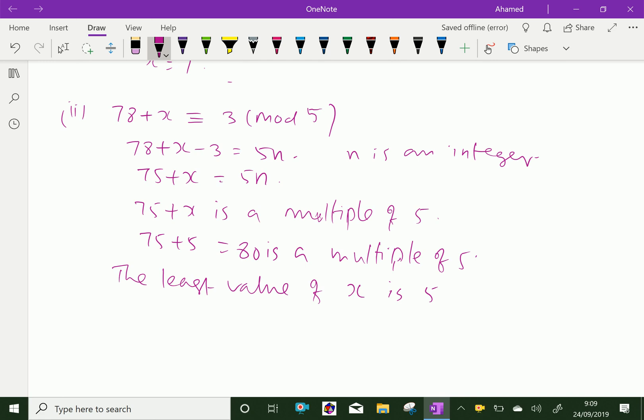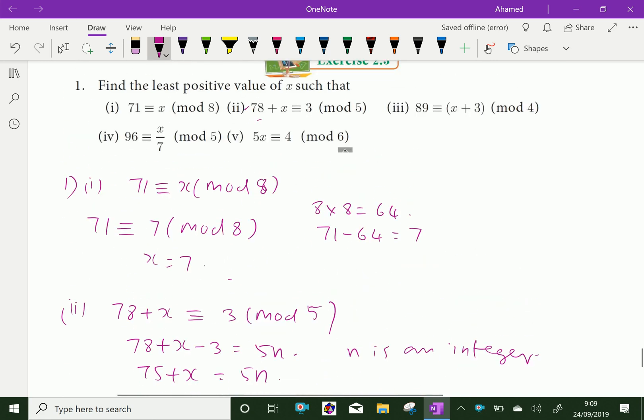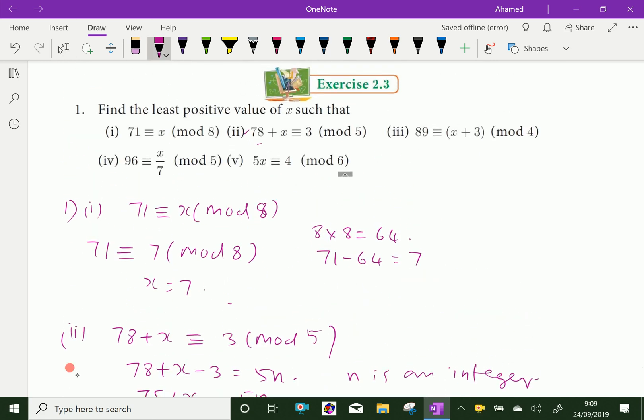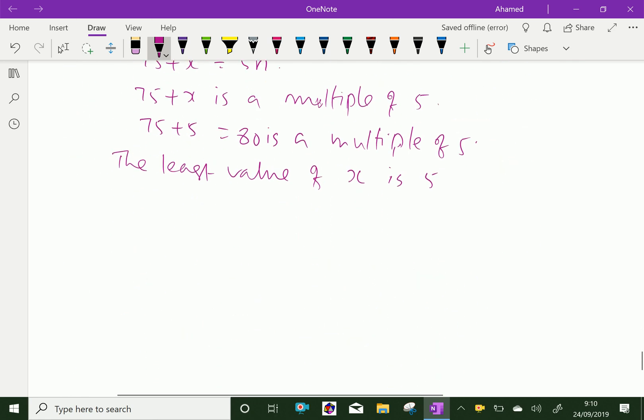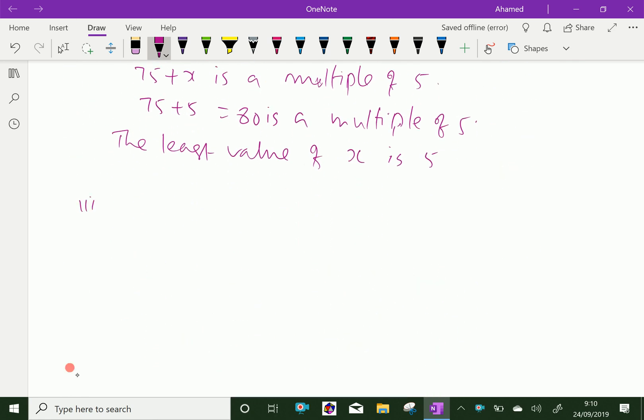Now, let's see number 3. 89 is equivalent to x plus 3 mod 4.